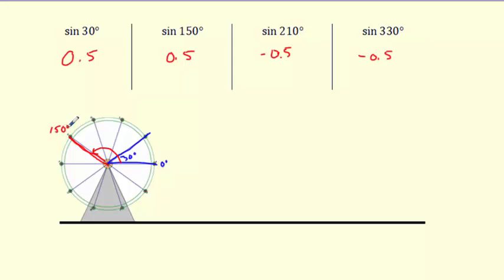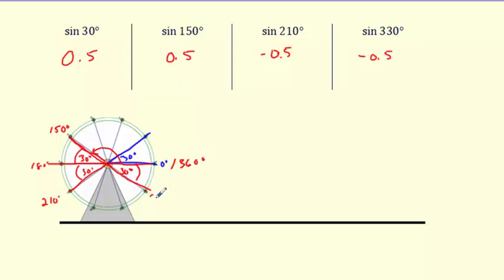So 150 is over here. What does it make with the straight line? That angle is 30 degrees, because straight across is 180, so it's 30 less. And 210 is 30 past 180. And 330 is 30 degrees below 360. They all have in common that they're 30 degrees away from the x-axis.